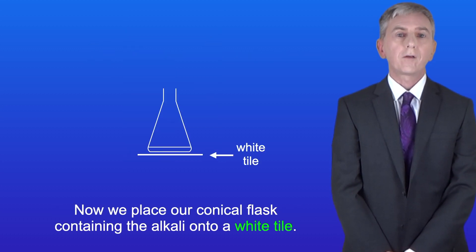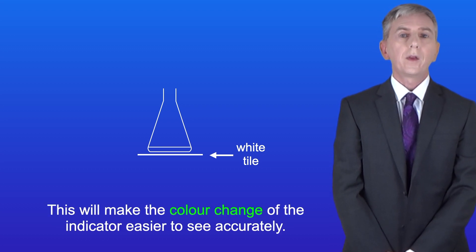Now we place our conical flask containing the alkali onto a white tile. This will make the color change of the indicator easier to see accurately.